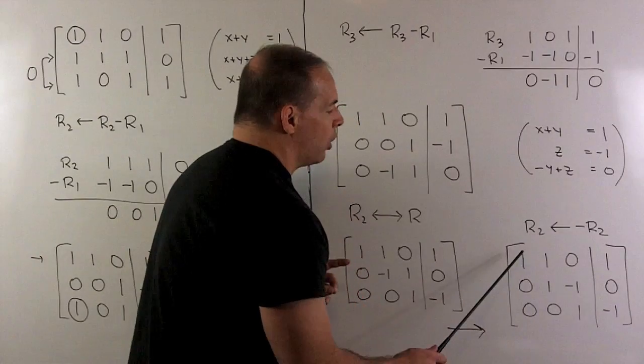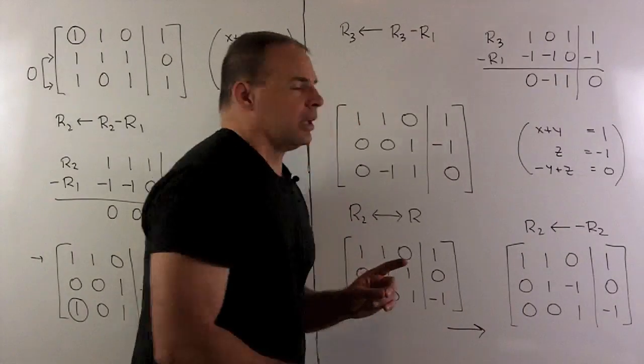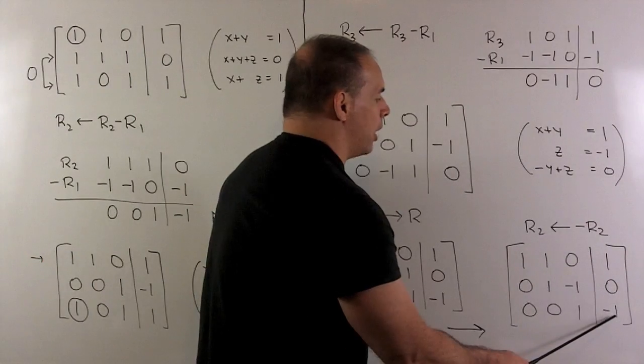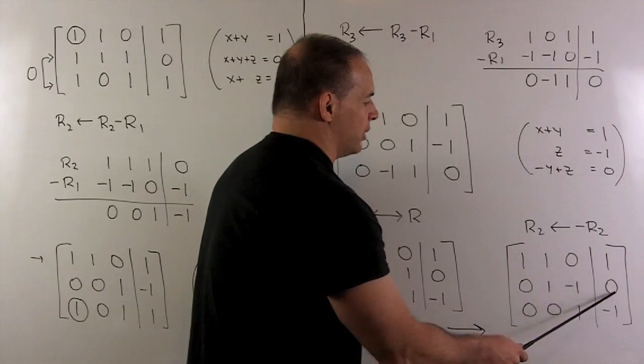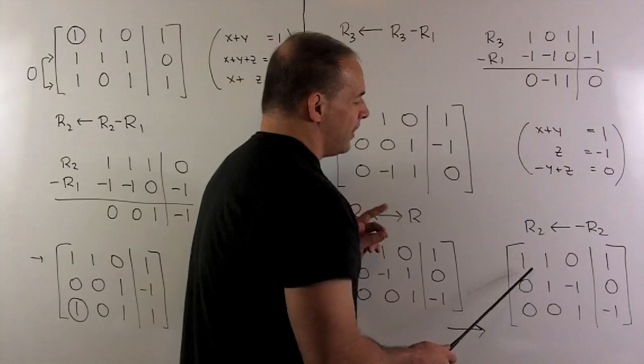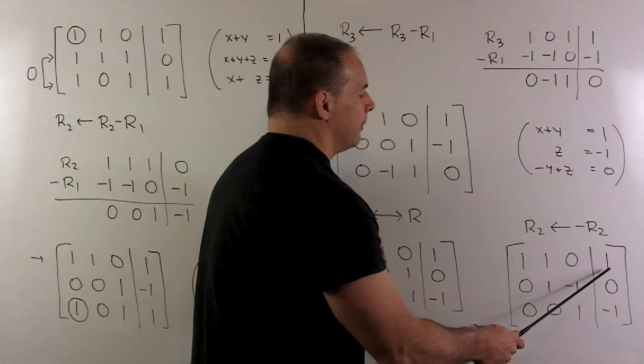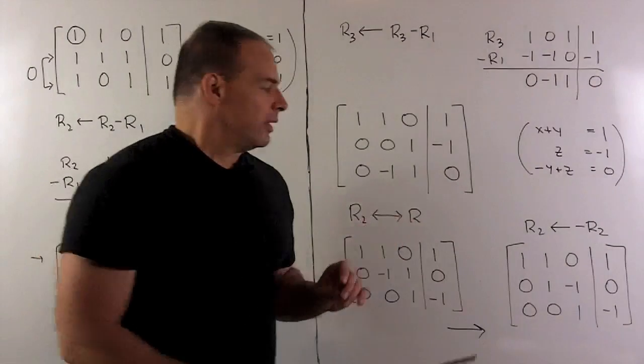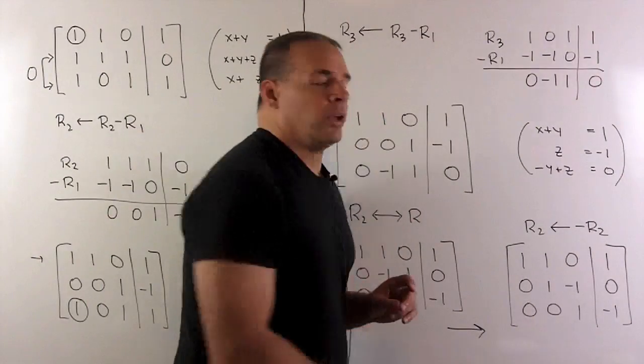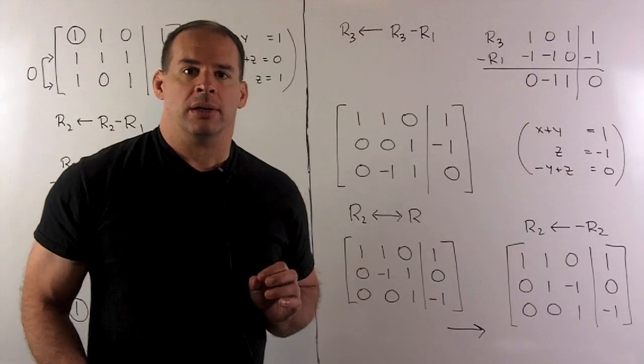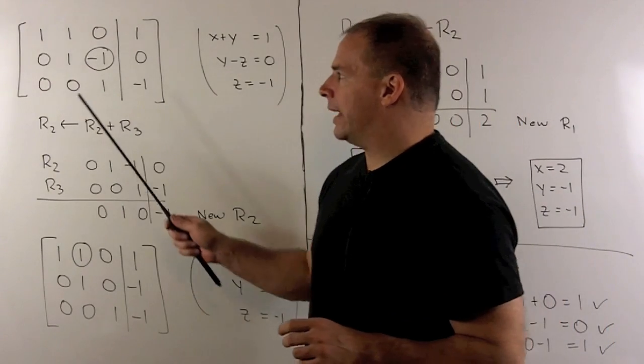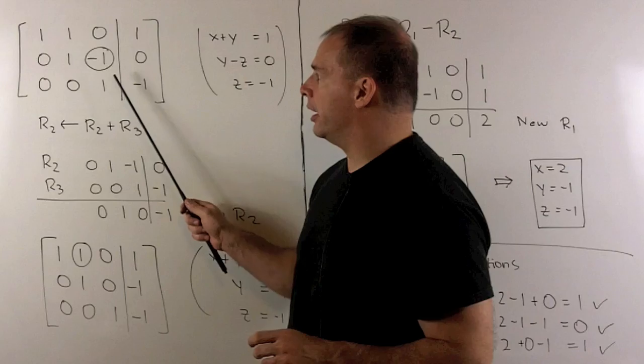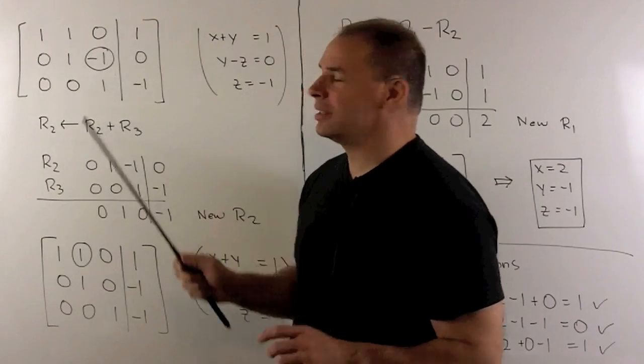So we have 1's down the diagonal. If you wanted, at this step, we could just take z equal to minus 1. We have y minus z equals 0, so I could solve for y. Then I have x plus y equals 1. I could solve for x in terms of the y we just found. So once you have this upper triangular matrix here, you can start back substituting. Now we have 1, 0, 0, 1, 0, 1. We want this minus 1 to be a 0.